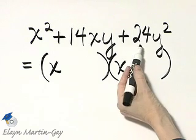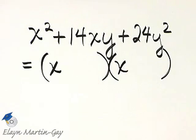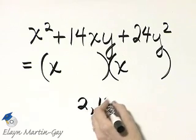Now we're looking for two factors of 24 whose sum is 14. That would be 2 and 12.